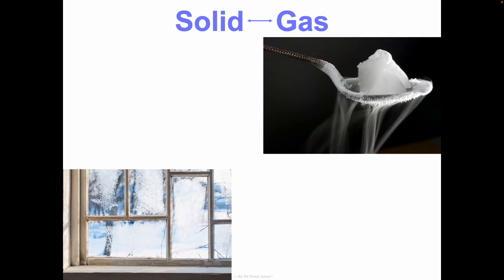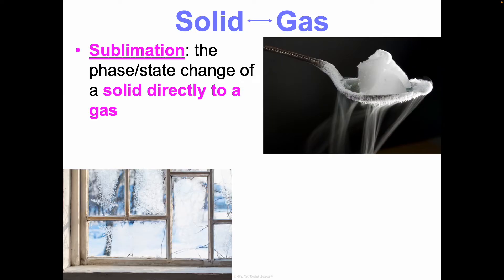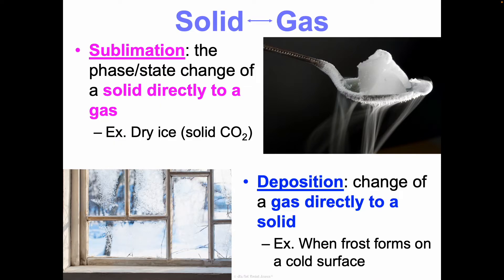Sublimation is the phase change of a solid directly to a gas, skipping the liquid phase entirely. A classic example is dry ice, which is solid carbon dioxide. Deposition is the reverse — a gas changes directly to a solid. An example of deposition is frost forming on a cold surface like a window: it's not snowing, yet frost appears directly.